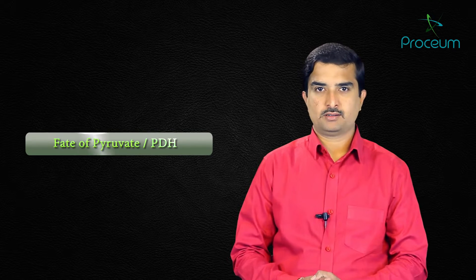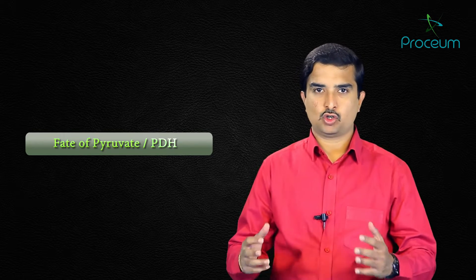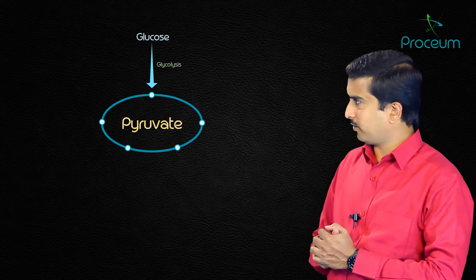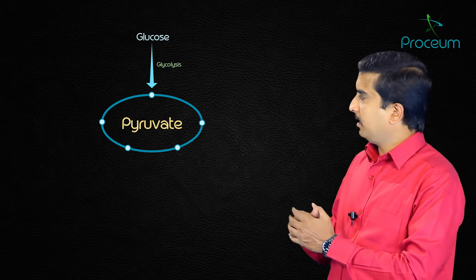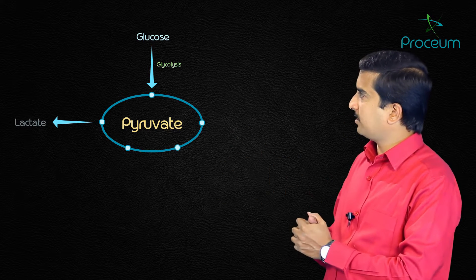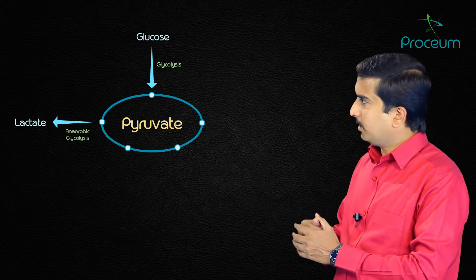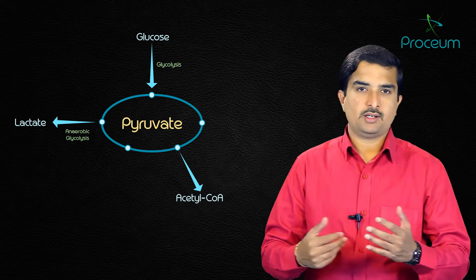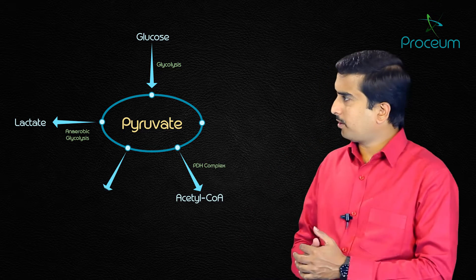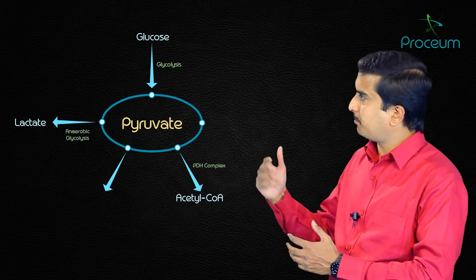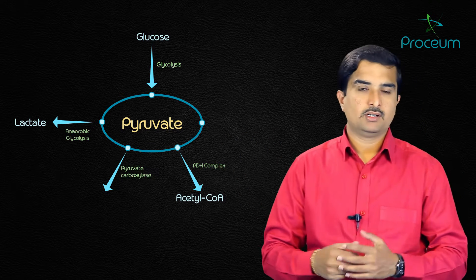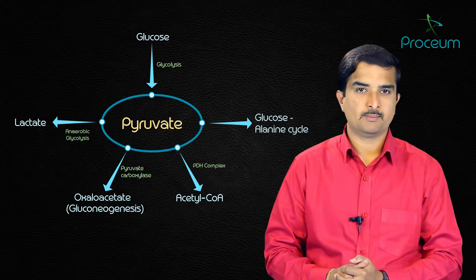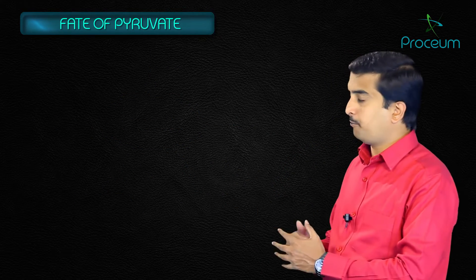Fate of pyruvate and the pyruvate dehydrogenase complex. Pyruvate is produced as the end product of glycolysis and may get converted into lactate in anaerobic glycolysis, or into acetyl-CoA via the pyruvate dehydrogenase complex, or acted upon by pyruvate carboxylase in gluconeogenesis, or it may take part in the glucose-alanine cycle.